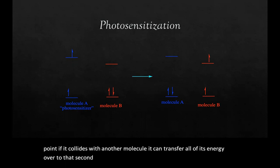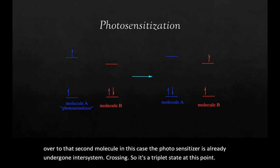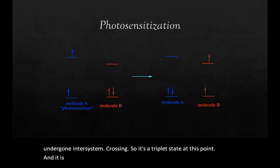In this case, the photosensitizer has already undergone intersystem crossing, so it's a triplet state at this point, and it is transferring its energy to the other molecule, which is also excited as a triplet state here.